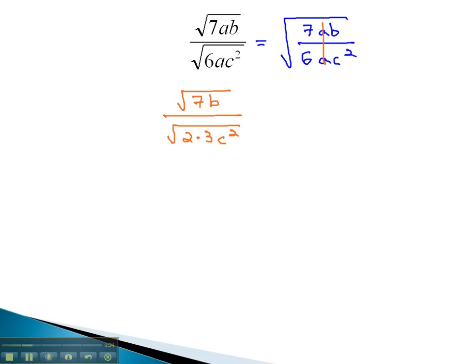The only thing we can pull out of a radical, as we simplify the radicals, is the c squared. Dividing the exponent by the index, we get 1c coming out. We now have the square root of 7b over c times the square root of 2 times 3.